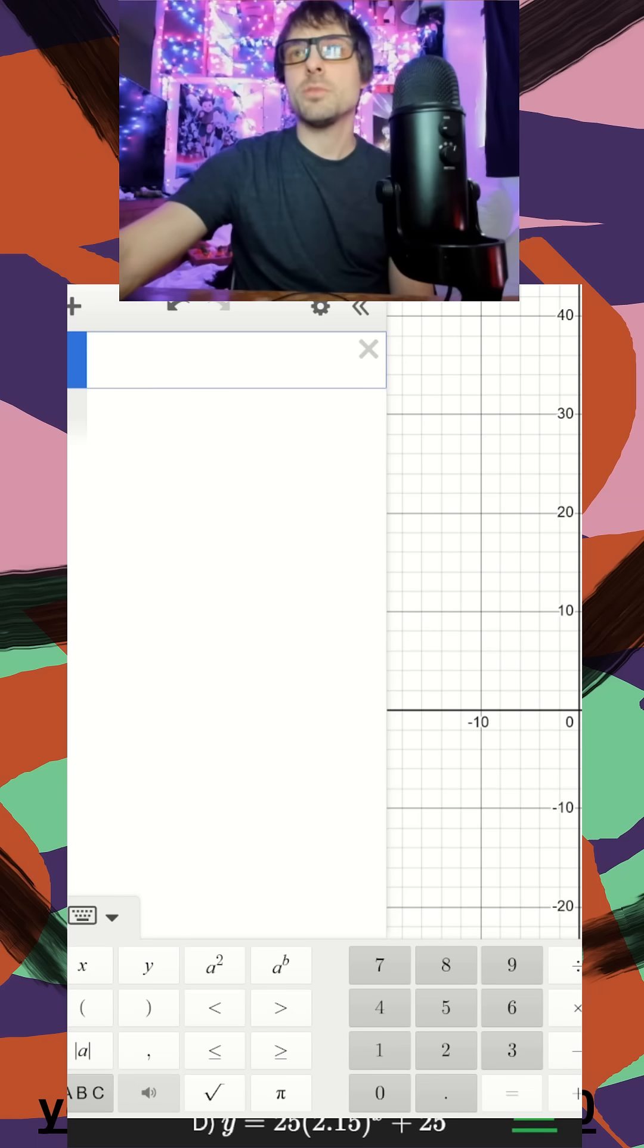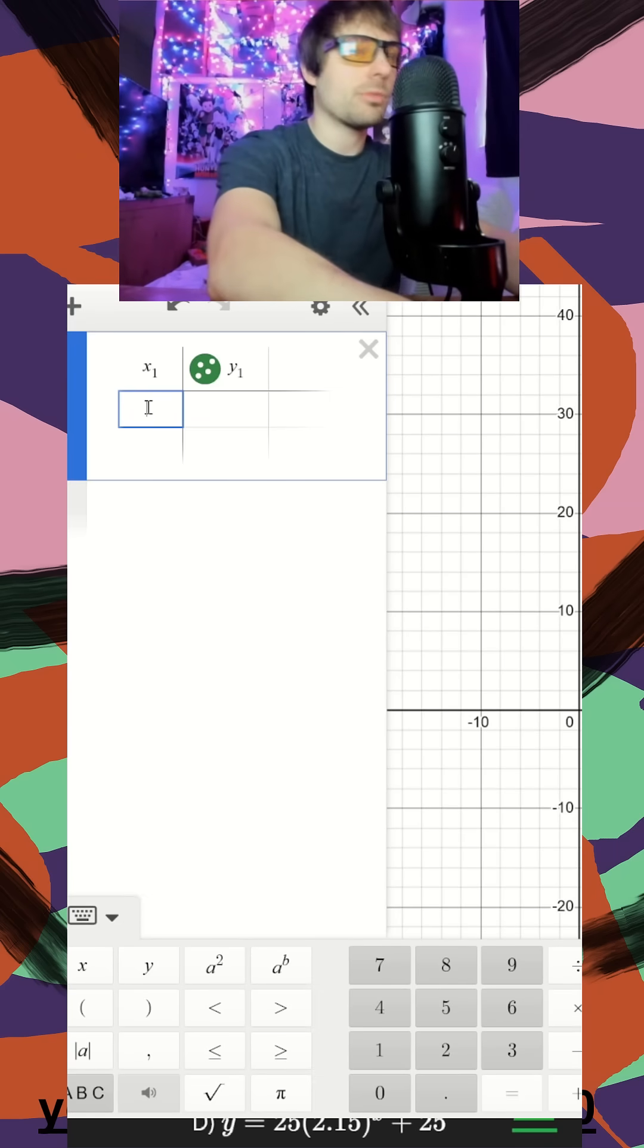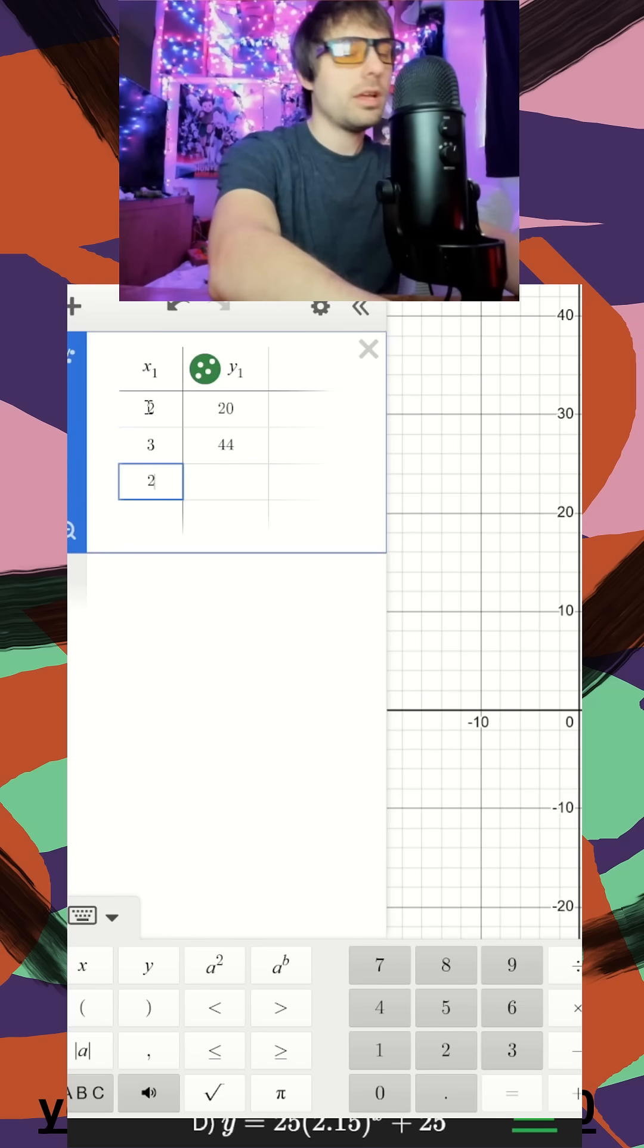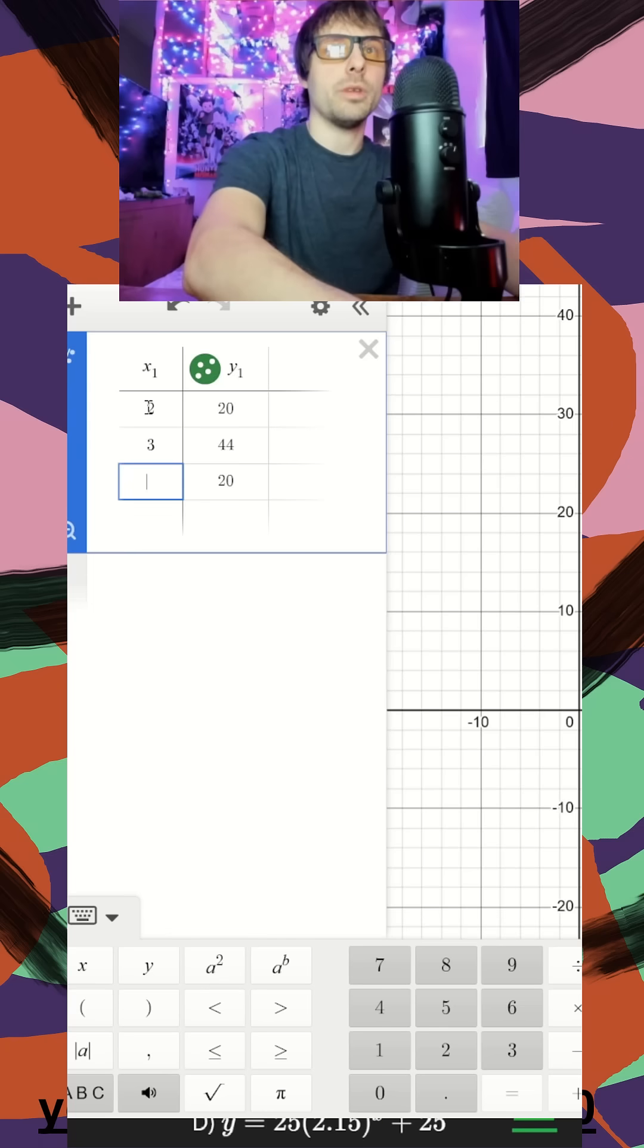We'll open up Desmos here, add a plus sign, add a table, and throw in our three points: (2, 20), (3, 44), and (4, 100).